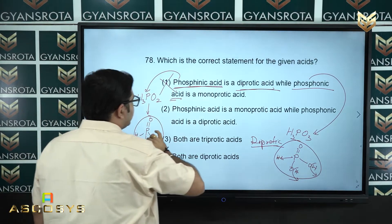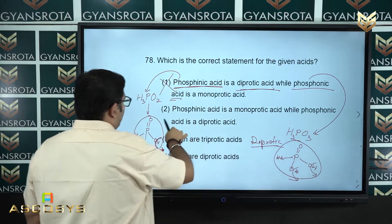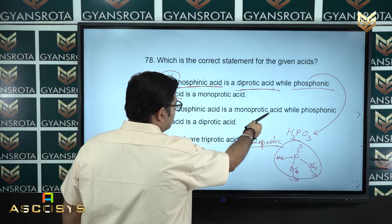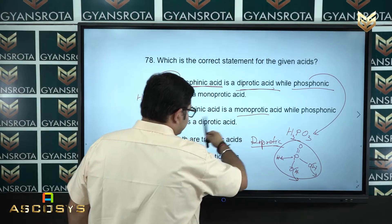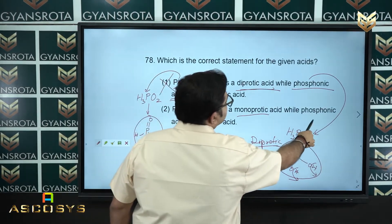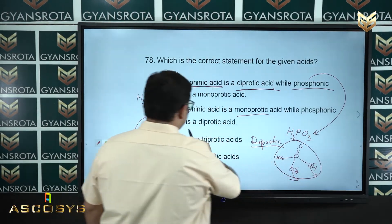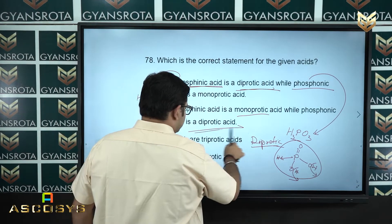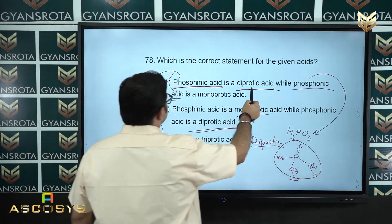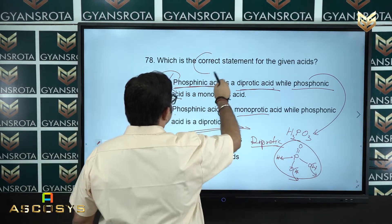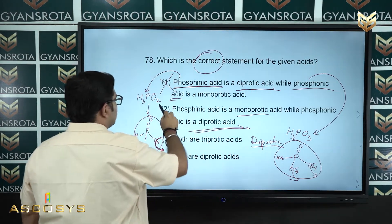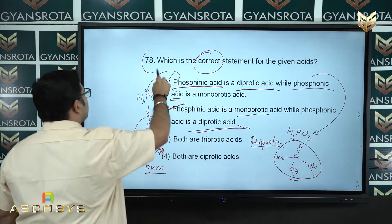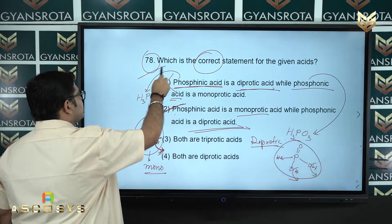Option number 2 states: phosphinic acid is monoprotic — yes, that is true. And phosphonic acid is diprotic — yes, that is also true. So option number 2 is the correct answer of question number 78.